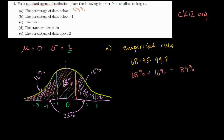Part B: the percentage of data below minus 1. Minus 1 is right there, so they want this area — the percentage of data below minus 1. Well, that's going to be 16%; we just figured that out. And you could have already known, just looking at a normal distribution, that part B is a subset of part A, so it's going to be a smaller number. But it's good to practice with the empirical rule.